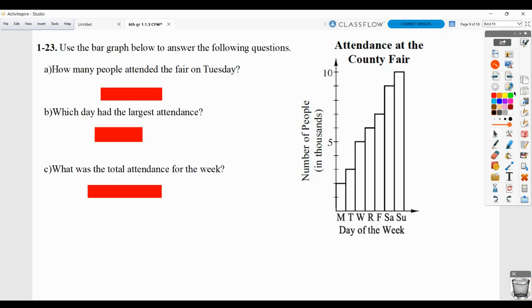Here, you're going to be using this bar graph to answer these questions. How many people attended the fair on Tuesday? So we're going to find Tuesday down here. We're going to come across. But notice that this is the number of people in thousands. So we have 1, 2, 3, but not 3, 3,000 would be the attendance. And, of course, we need a label. What day had the largest attendance? Well, that would clearly be Sunday.